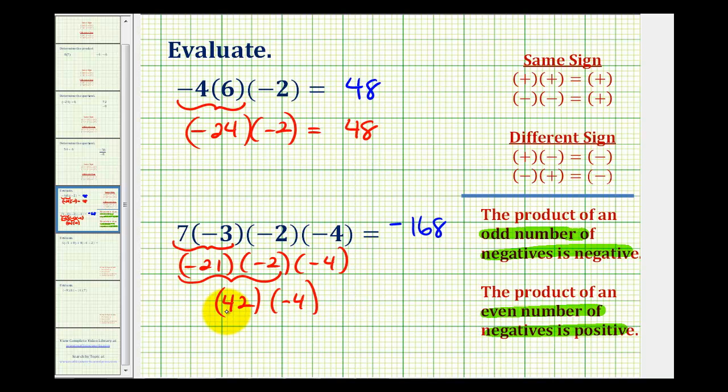And then lastly, we have positive 42 times negative 4, which of course is negative 168. So whichever method you want to use, you'll get the right sign for the product.